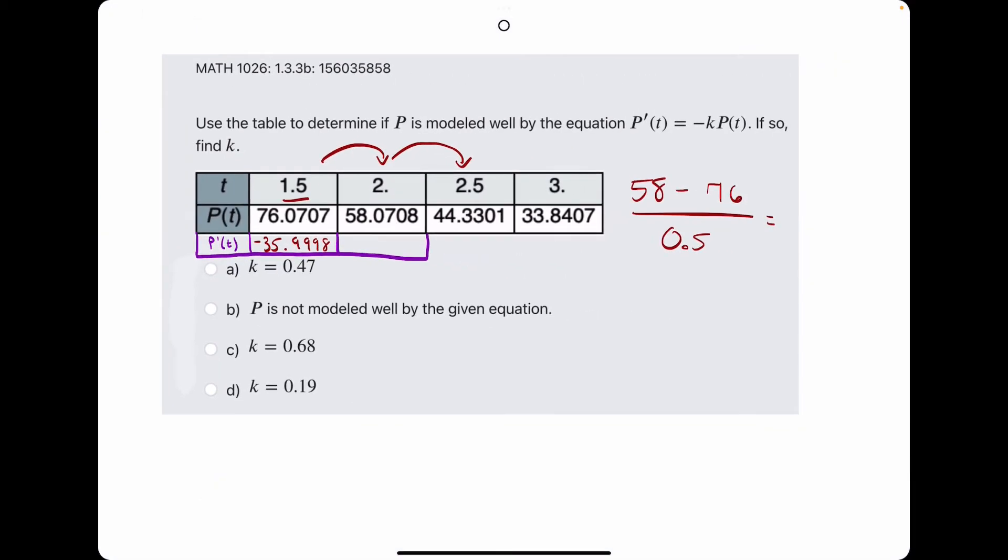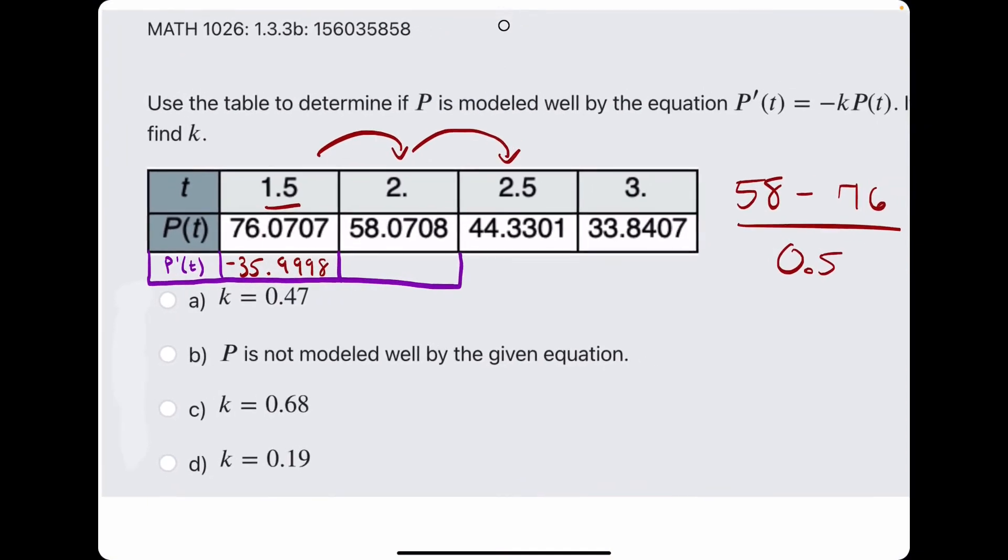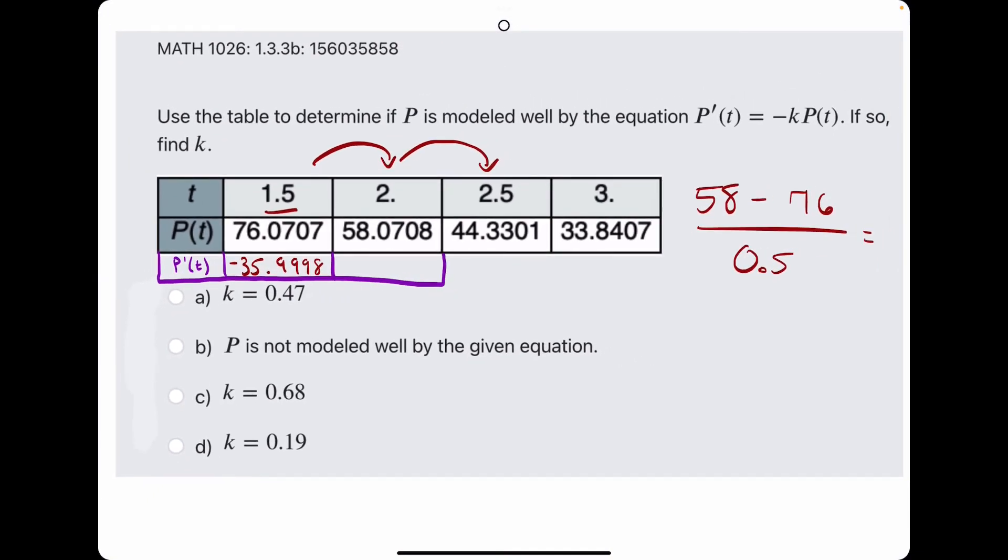All right, so that's how much we would actually increase if the t value was going up by a whole 1, which maybe we could see that from here to here, about 35.